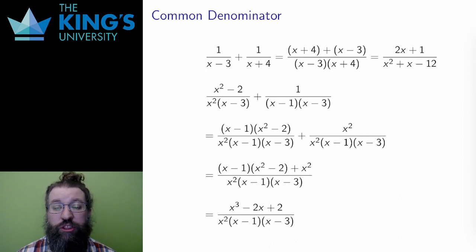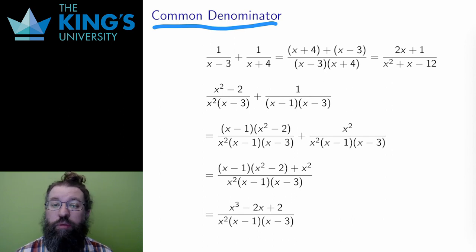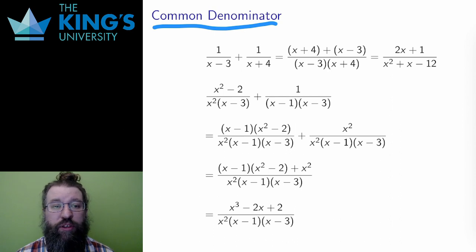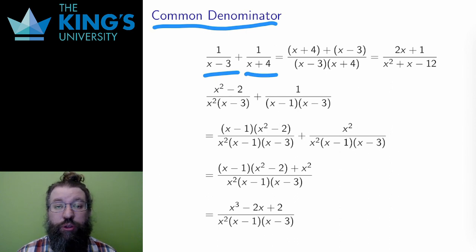It starts by talking about fractions and common denominator. If I want to add two fractions together, I need a common denominator. This was true for number fractions and likewise true for rational functions, for polynomial fractions. If I want to add together 1 over x minus 3 and 1 over x plus 4, I need a common denominator. Here the two fractions have nothing in common in their denominators, so the common denominator is the product of the two denominators, x minus 3 times x plus 4.